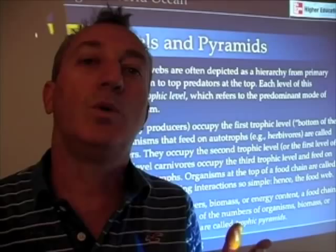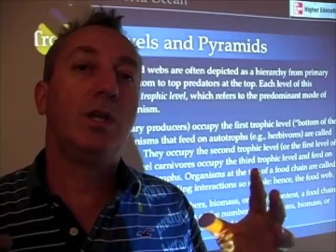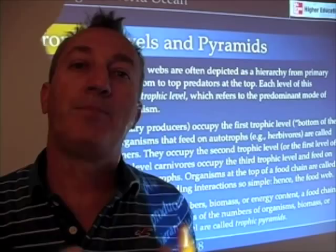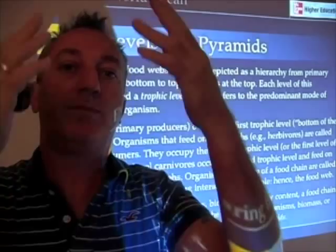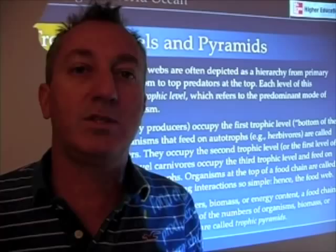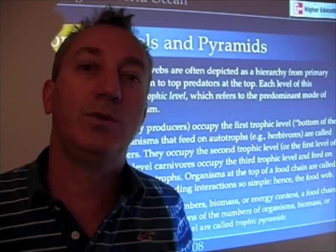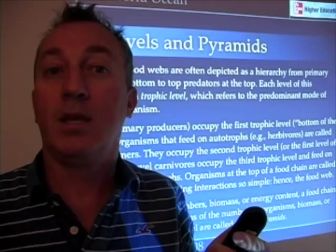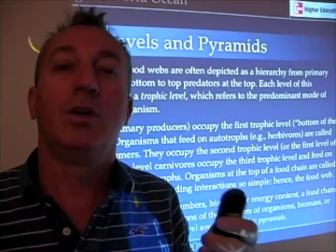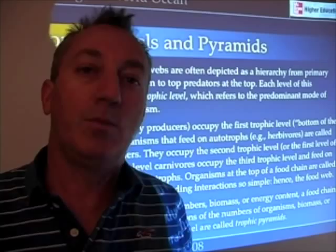This analysis — putting organisms according to numbers, biomass, or energy into a trophic pyramid — really helps us understand how energy and matter are transferred up food chains or food webs. It helps us understand the importance of eating lower on the food web, and why organisms like the blue whale, the largest organism on earth, try to feed lower on the food web. We'll see why that makes sense in terms of the trophic pyramid in just a second.